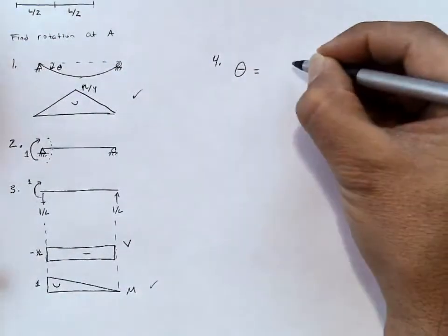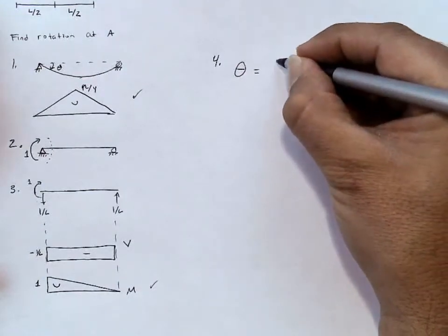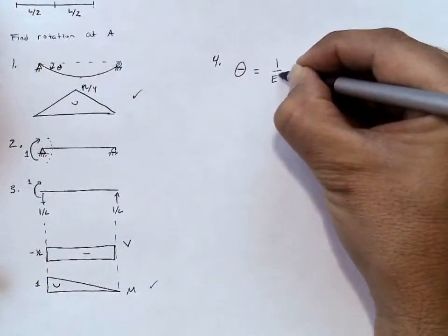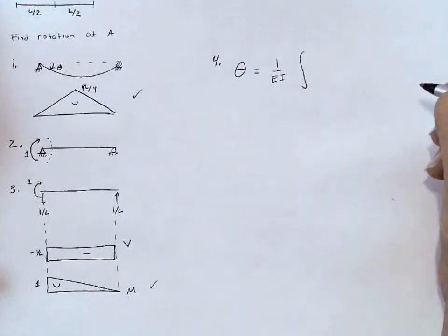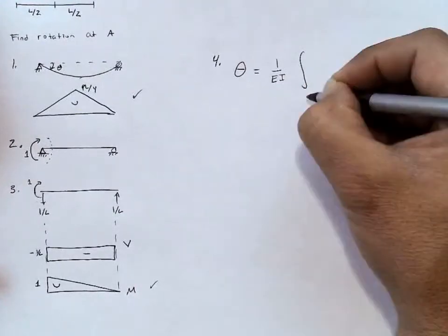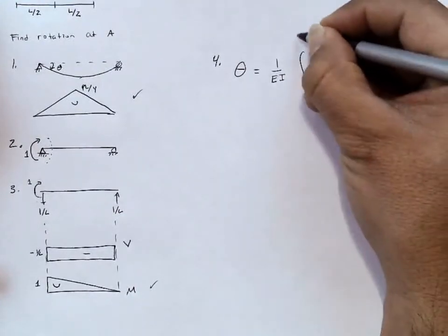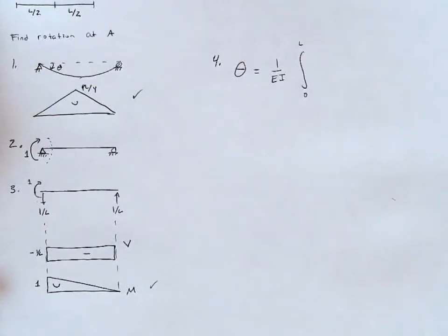So if we look at our virtual work equation, the rotation here is equal to 1 over EI times the integral. And in this case, we're going to integrate over the whole length. We'll call that 0 to L. If we take X is equal to 0 at point A.